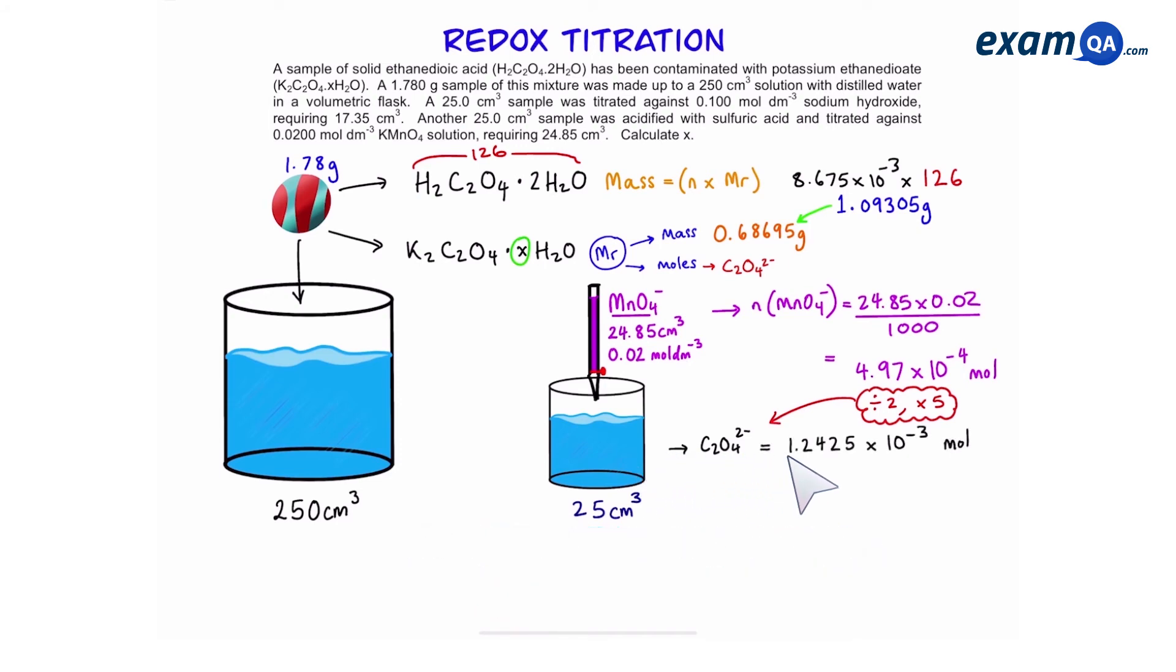And that gives us 1.242 times 10 to the power of minus 3. But remember the ethane dioate in here is from both the ethane dioic acid and also from the potassium ethane dioate because remember they are mixed together in the solution. We already know the moles of ethane dioic acid because of the previous titration with sodium hydroxide.